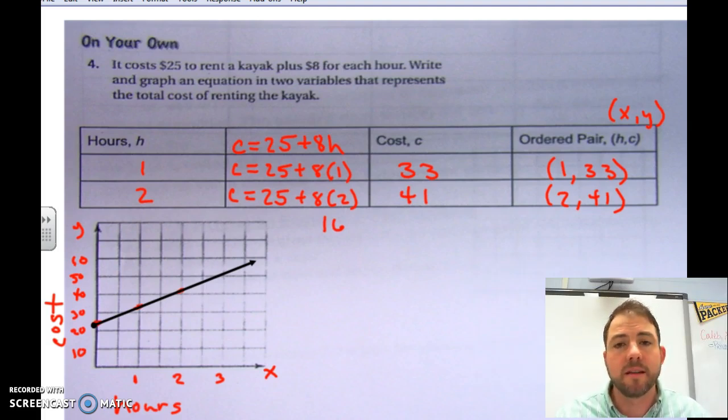And that is an example of how we can write an equation in two variables. And then use that equation to graph to show the information in a different way. So, thank you. Hope that helped.